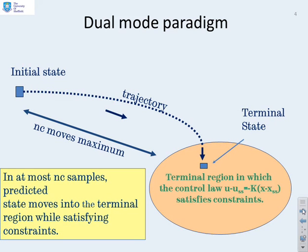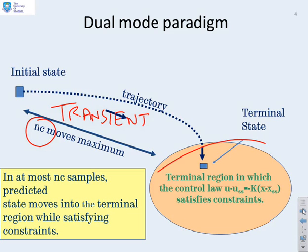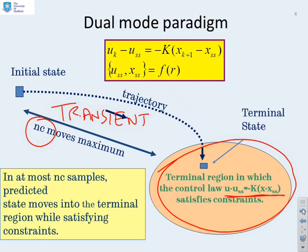So here's a typical dual mode paradigm. You'll notice you have a transient stage, so I could write that here, where normally we've indicated in this book that you imagine that as NC samples. And then you have a terminal mode. And in the terminal mode, you have a fixed control law, and I've put that control law up here.